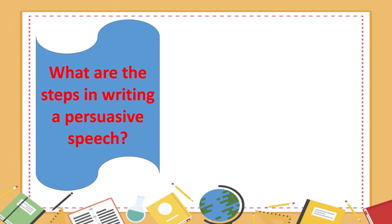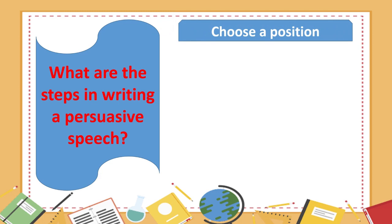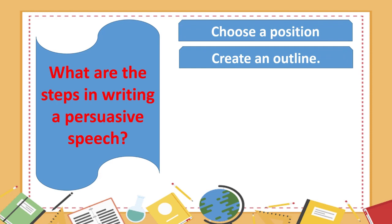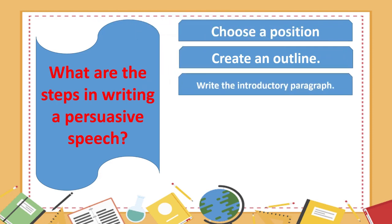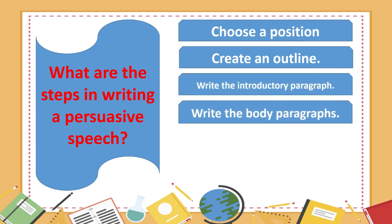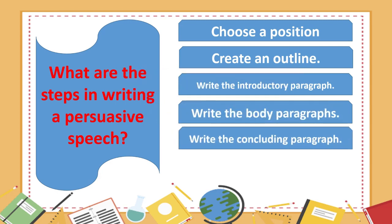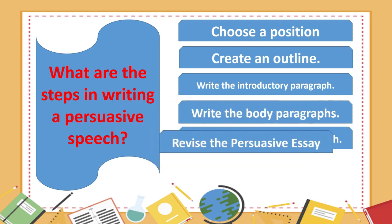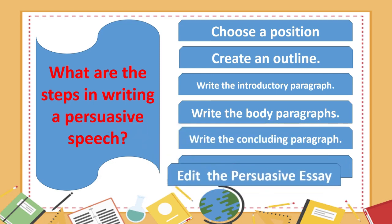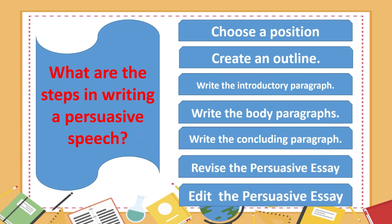What are the steps in writing a persuasive speech? Number 1: Choose a position. Number 2: Create an outline. Number 3: Write the introductory paragraph. Number 4: Write the body paragraphs. Number 5: Write the concluding paragraph. Number 6: Revise the persuasive essay. Number 7: Edit the persuasive essay for the final draft.